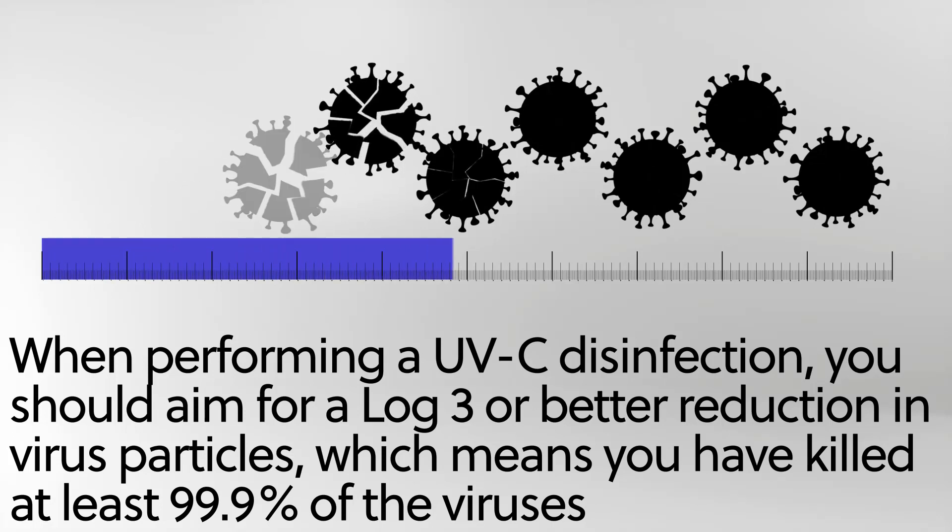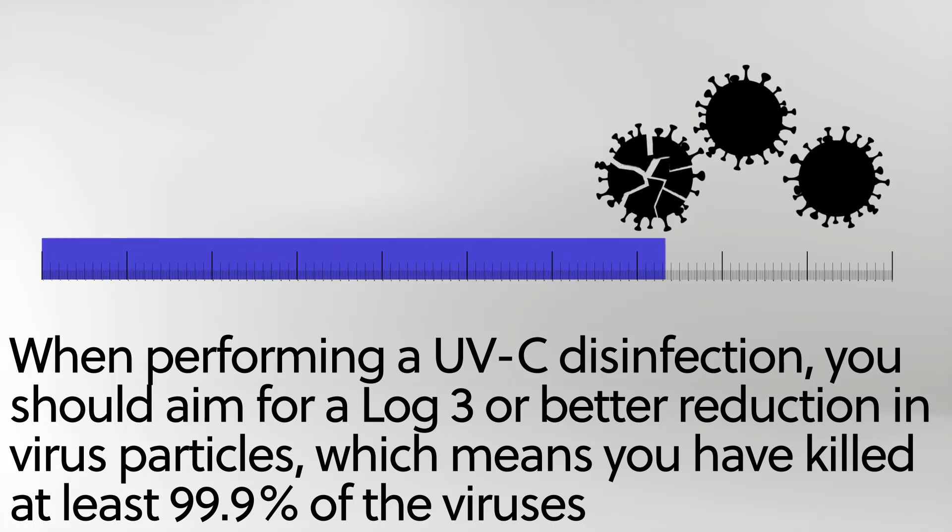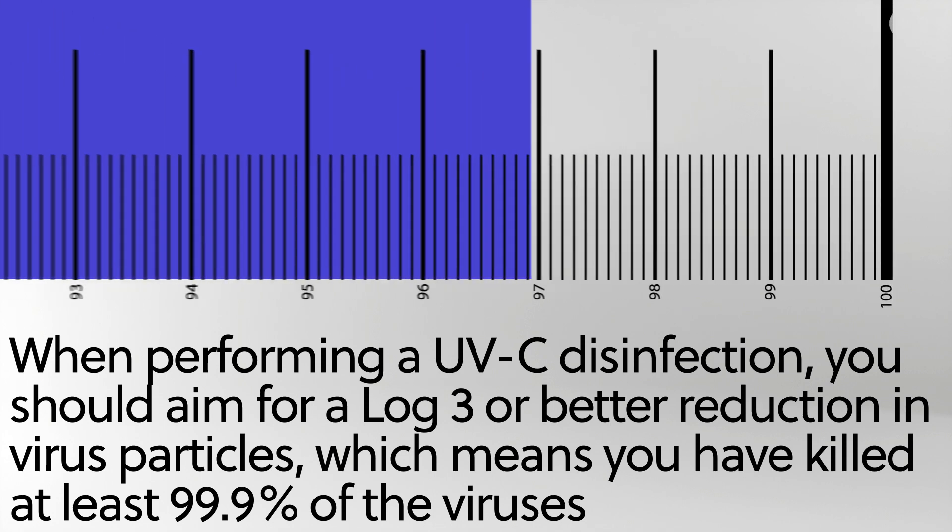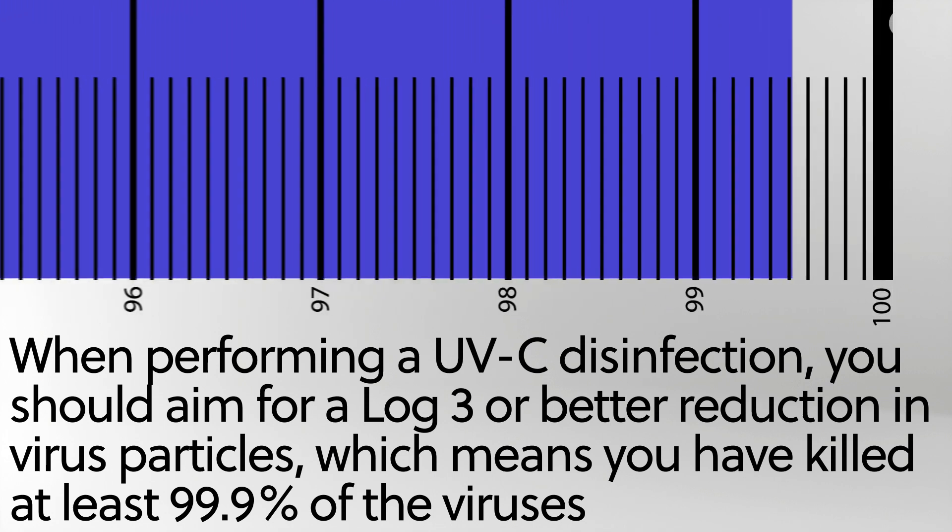When performing a UV-C disinfection, you should aim for a log 3 or better reduction in virus particles, which means you have killed at least 99.9% of the viruses.